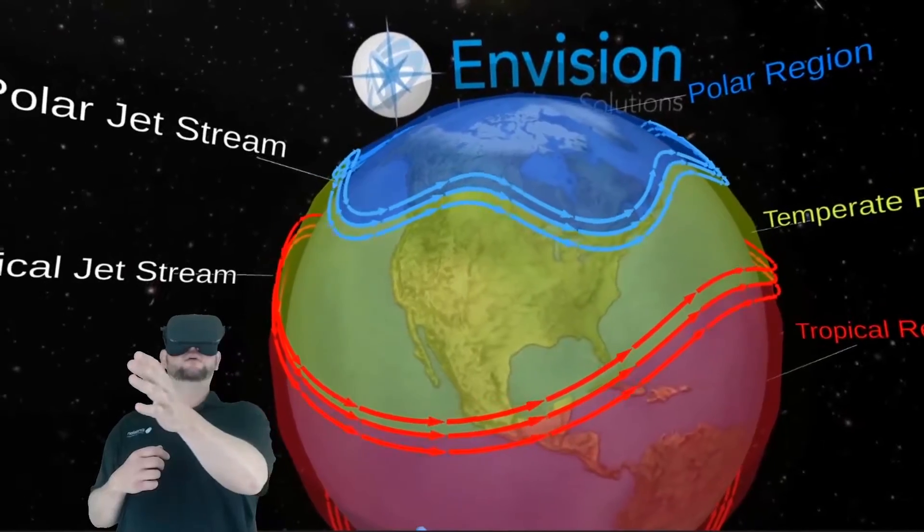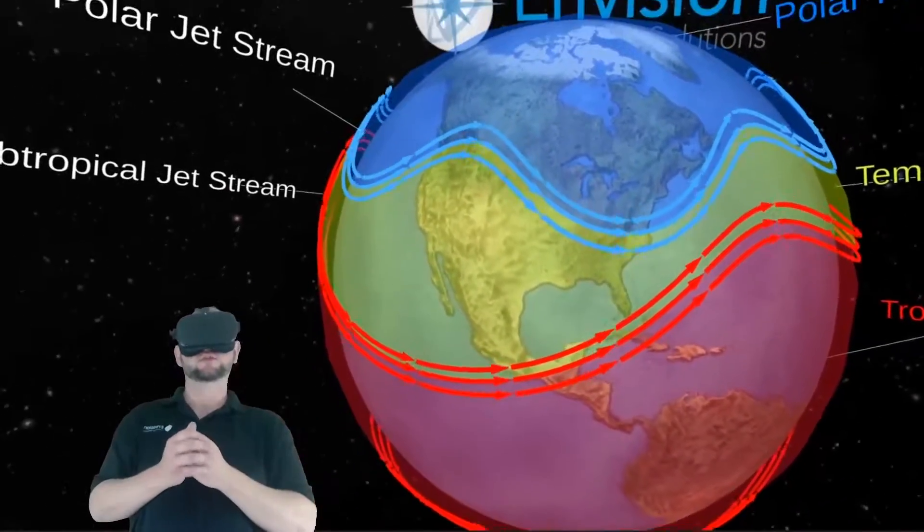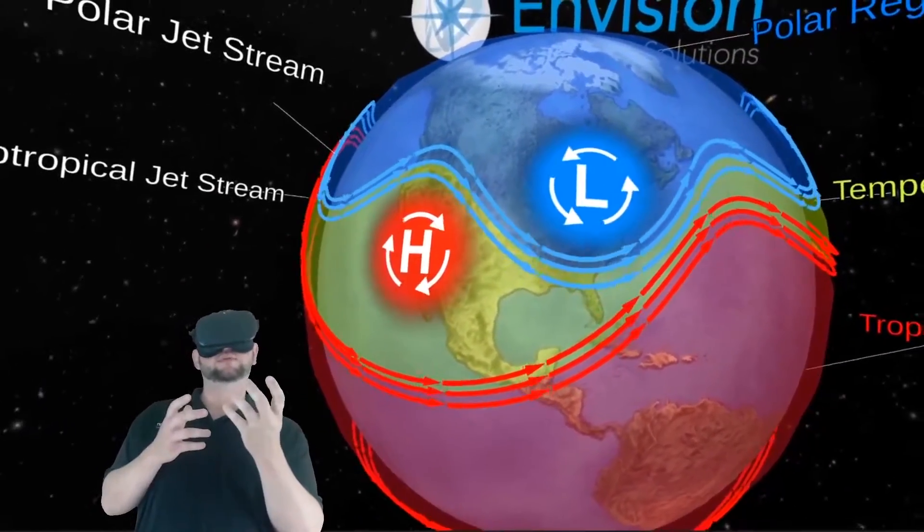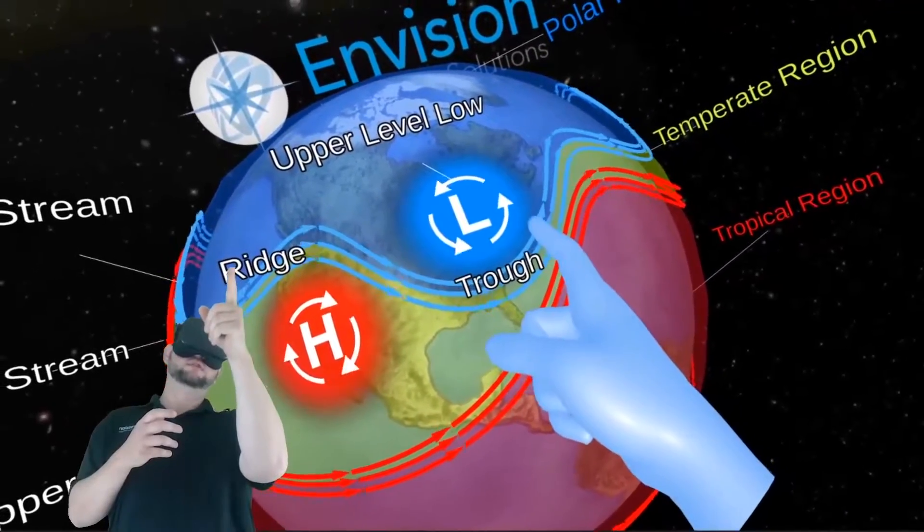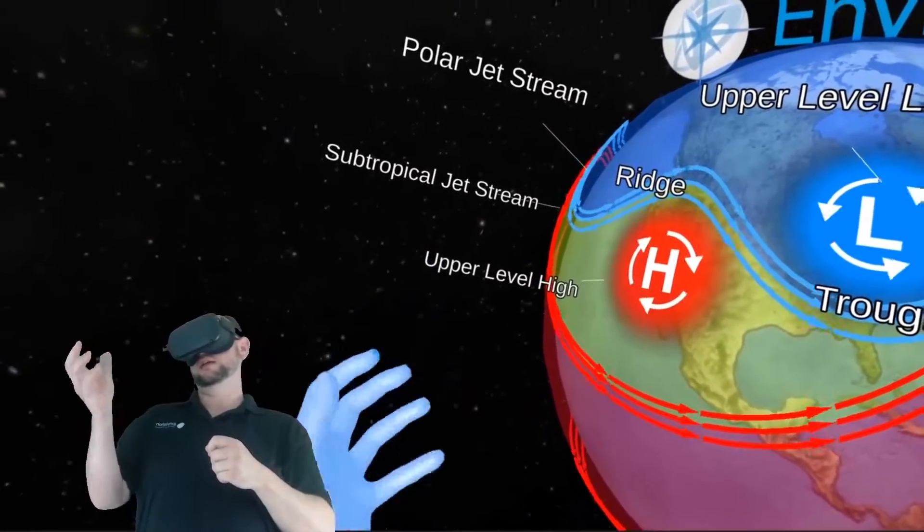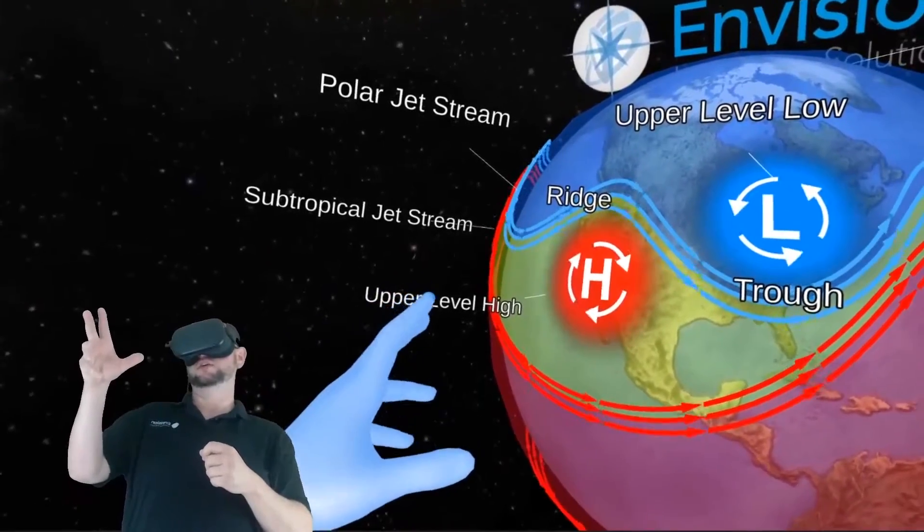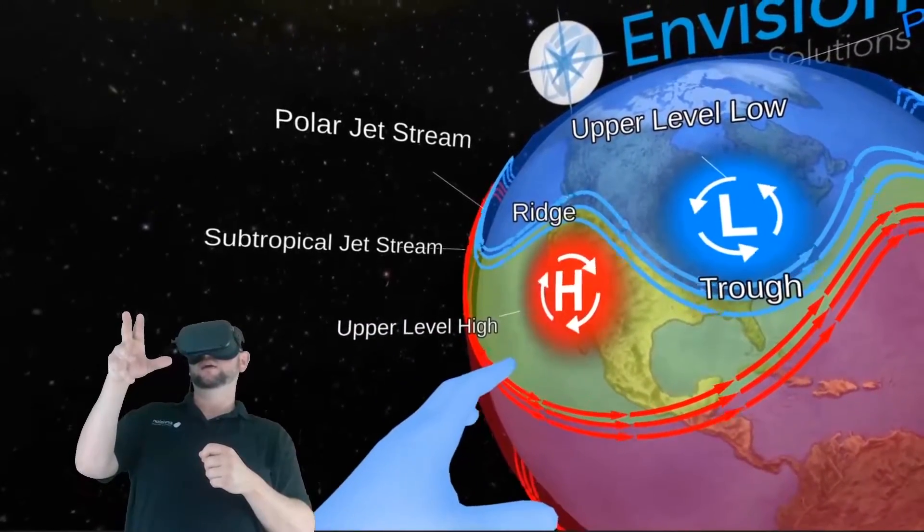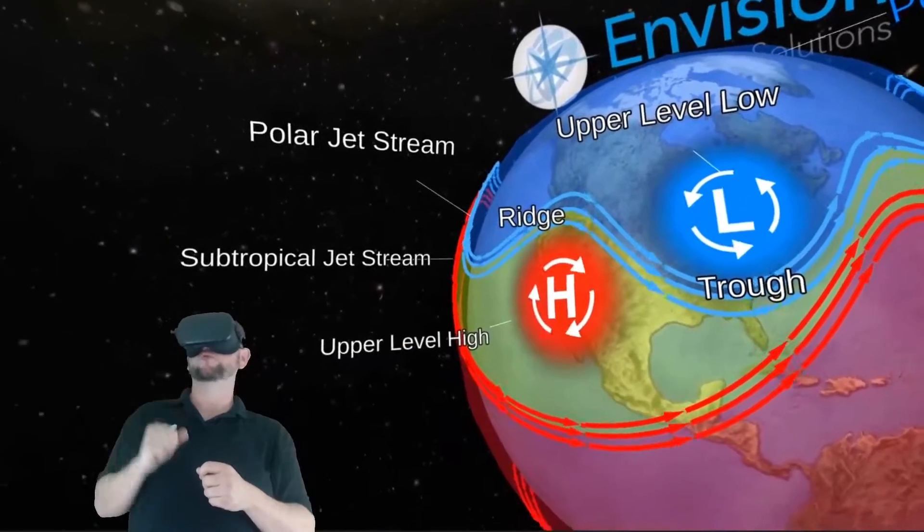Now, these jet streams like to move around. And when they dip, they form upper level lows and troughs. And when they sort of peak, they pull warm air above and generate an upper level high underneath called a ridge.